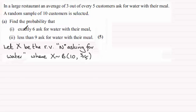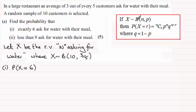And in this first one then we're being asked what's the probability that we get exactly 6 people asking for water. So that's the probability that X equals 6. And we should know that from the binomial distribution,